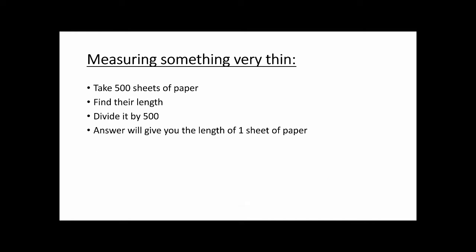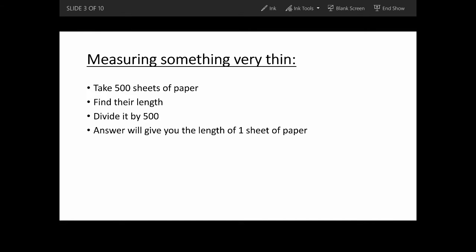Next, if you're measuring something very thin, like a piece of paper, you take 500 sheets of paper, find their total length using a ruler and divide it by 500, and the answer will give you the length of one sheet of paper.